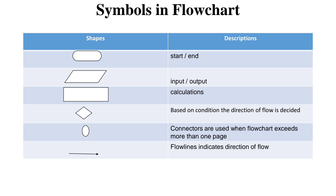The next is the parallelogram. The parallelogram shape is used to indicate input and output. We can specify the input as well as the output data to be printed inside the parallelogram. The next is the rectangle, which represents the process symbol. If any kind of computation is needed to be carried out, all the computation statements can be given inside the rectangle — that is the process symbol.